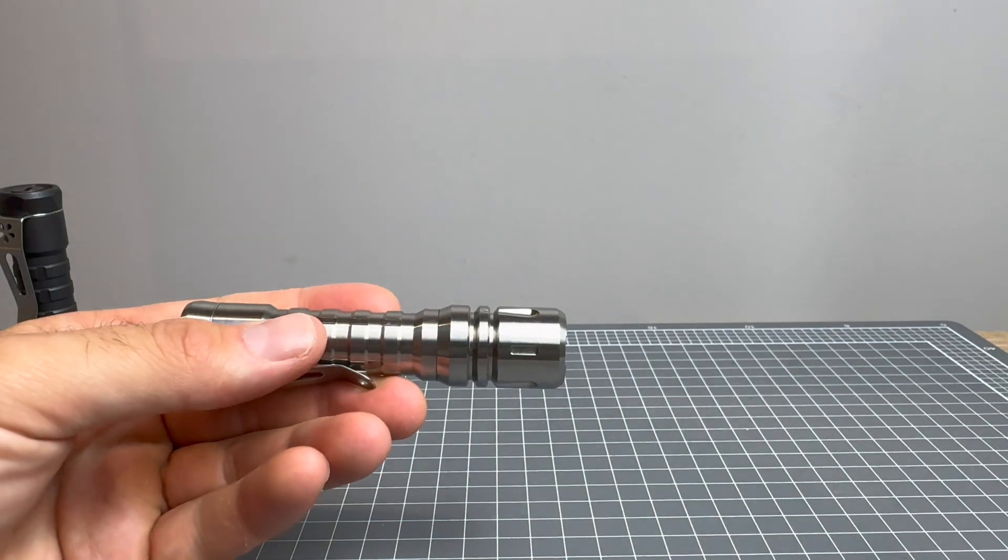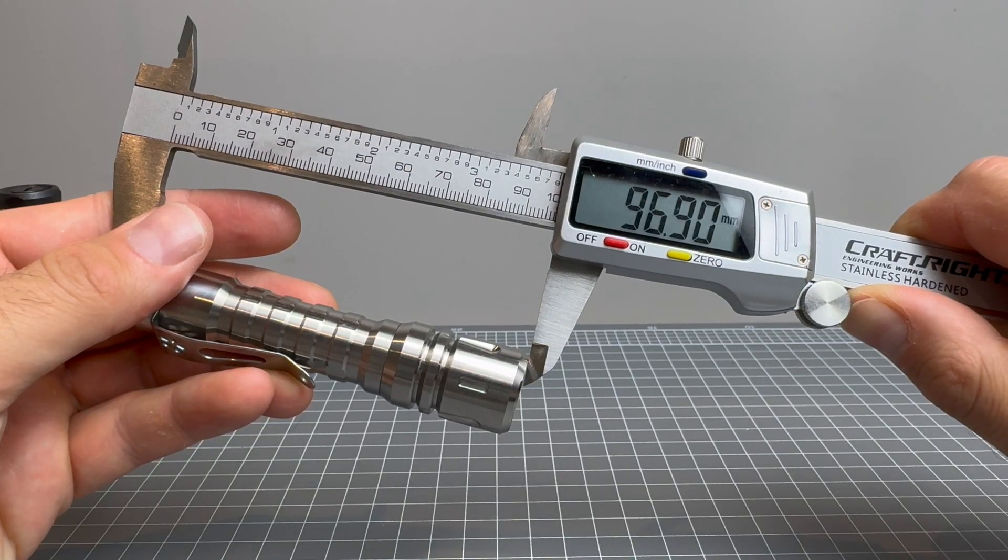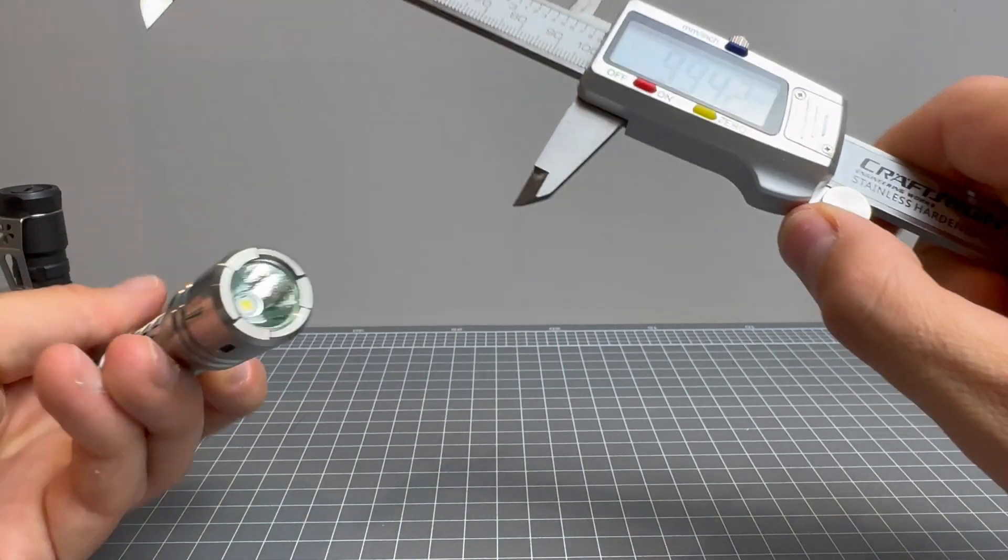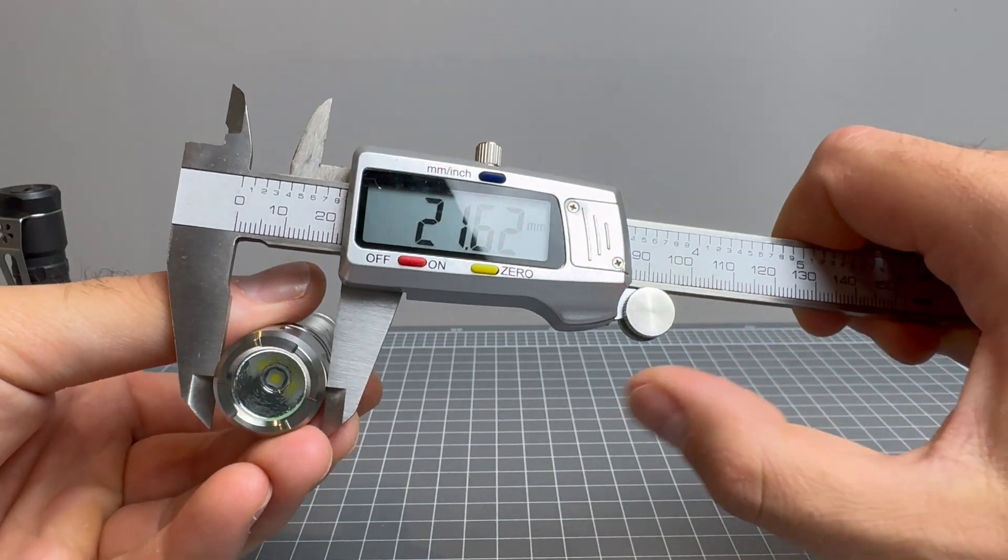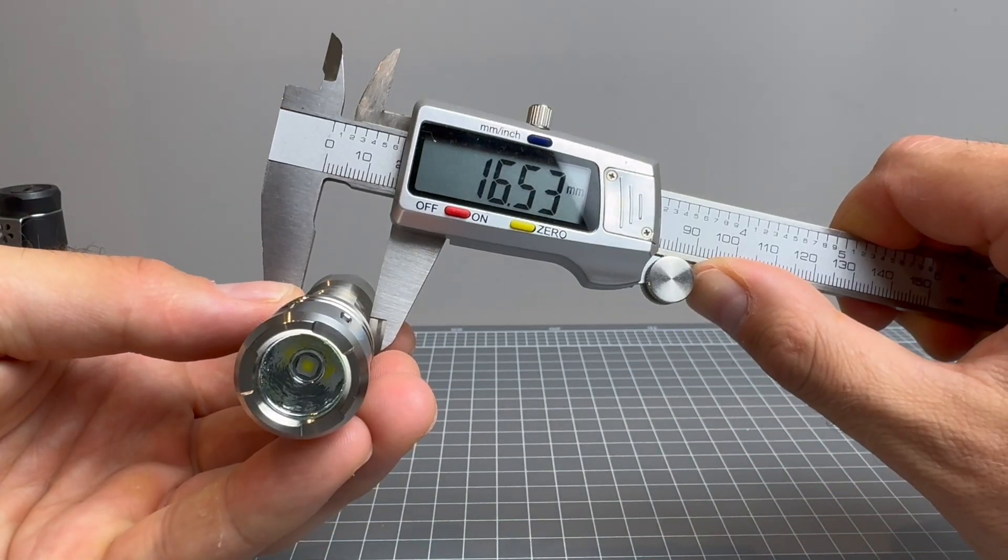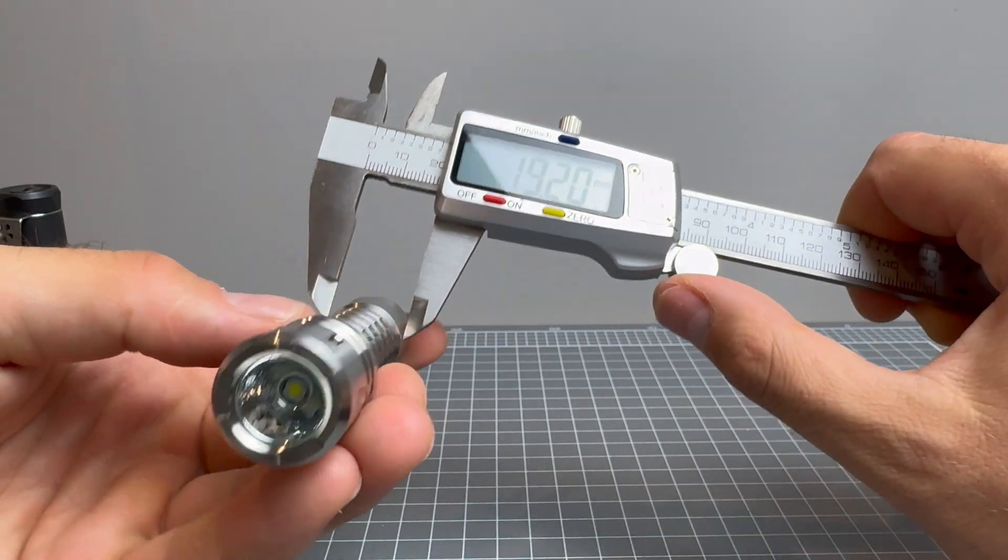Now, I will just do some measurements. So head to tail, we have 96.9 millimeters, face width 21.62 millimeters, body width 16.53 millimeters, tail width 19.2 millimeters.